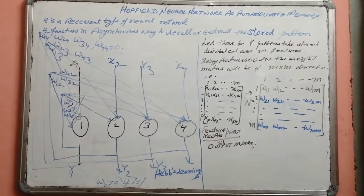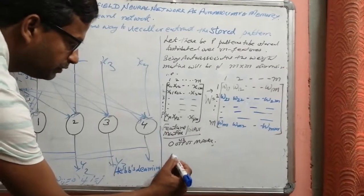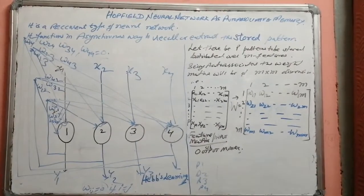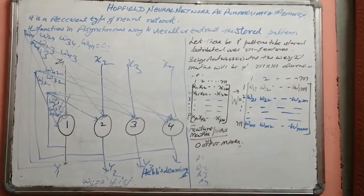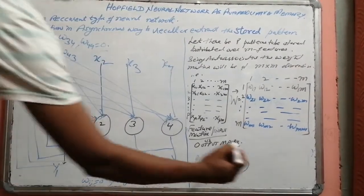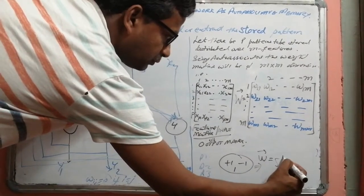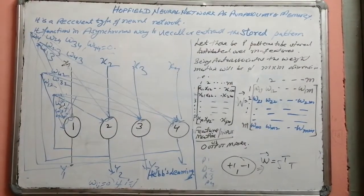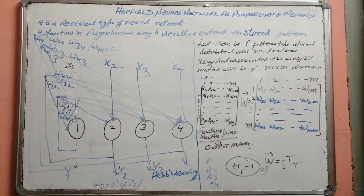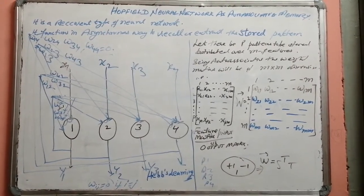So the learning rule remains the same. Suppose there are four patterns P1, P2, P3, and P4 to be stored. If all of them are bipolar in nature — in the form of plus one and minus one — we can apply the HAPS rule: the weight matrix equals the transpose of S multiplied by the target. Once these weights are set up, the Hopfield neural network has remembered all the stored patterns.